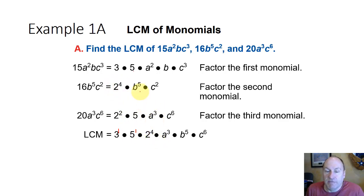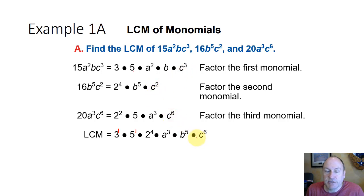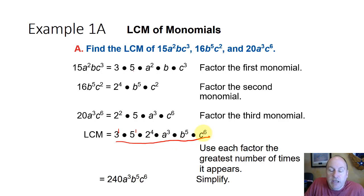The highest factor of a: we have an a squared and an a to the third, so a to the third is the highest. In a similar way, the highest factor of b is b to the fifth, and the highest factor of c is c to the sixth. So the lowest common multiple is the combination of all these largest factors.